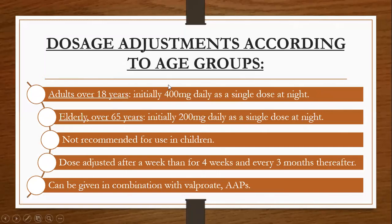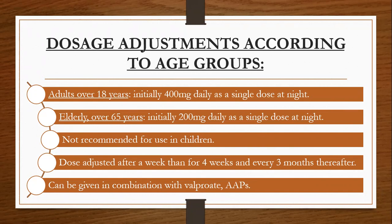Regarding dosage adjustments by age group: for adults over 18 years, initially 400 mg daily as a single dose at night is given. For elderly over 65 years, initially 200 mg daily as a single dose at night. It is not recommended in children. In adults and elderly, dose adjustment is reviewed after one week, then after four weeks, and every three months thereafter. Lithium can also be given in combination with valproate and atypical antipsychotics, but it should not be combined with drugs that cause harmful interactions.